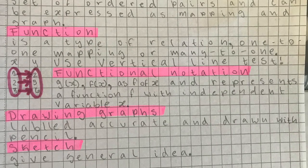Chapter 2.2 is about functional notation. Functional notation usually looks like a letter with an X in brackets — so G(x) or F(x); it could be any letter. When you say it out loud, it is called 'G of X' or 'F of X,' and it represents a function with the independent variable X. F(x) is the Y value, and X is the X. The dependent variable is what you're measuring, and the independent variable is the thing that is changing. When you see F(x), you have to know what it means.